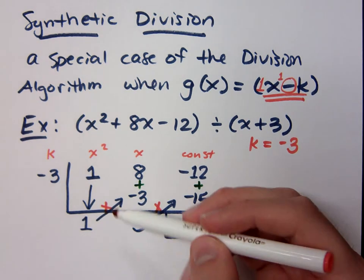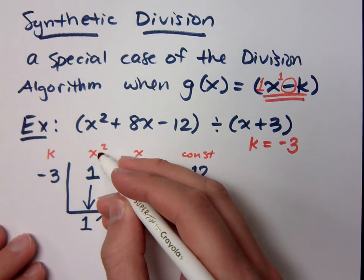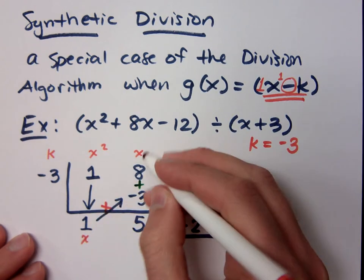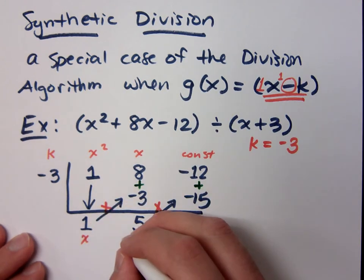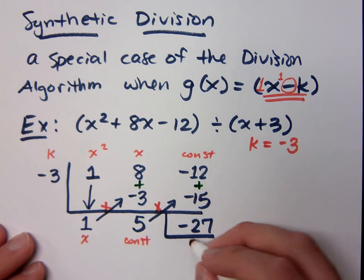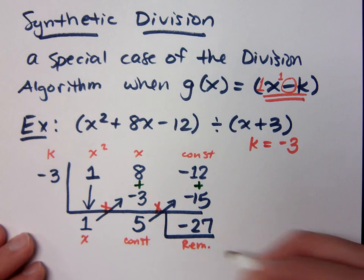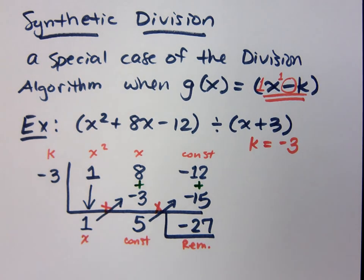Everything here is going to be 1 degree less. What's 1 degree less than x squared? x. What's 1 degree less than x? A degree of 0, which means it's a constant. And this piece inside here is going to be your remainder term. These numbers will then tell you the answer.